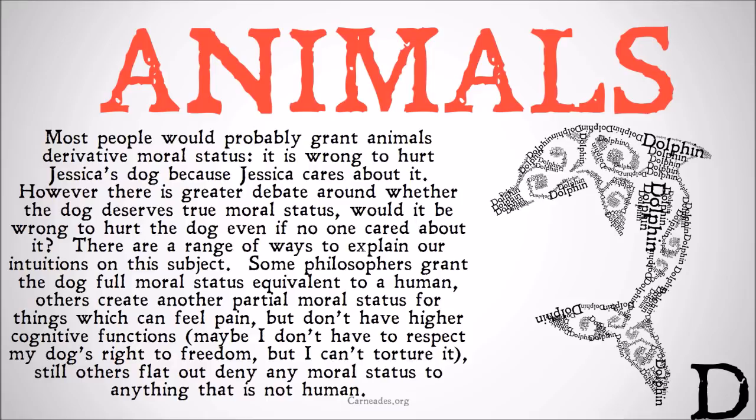There's a range of ways to explain our intuitions on this subject. Some philosophers grant the dog full moral status equivalent to a human, and would say anything that's wrong to do to a human, it's wrong to do to a dog. Others create another category of partial moral status, or might have a kind of gradient of moral status depending on other factors — for things that can feel pain but don't have higher cognitive functions. Maybe I don't have to respect my dog's right to freedom, but I can't torture it. However, exactly where those lines get drawn is a little iffy.